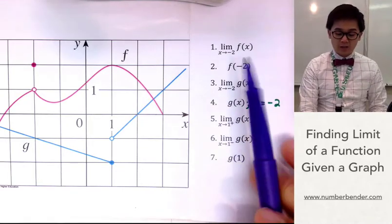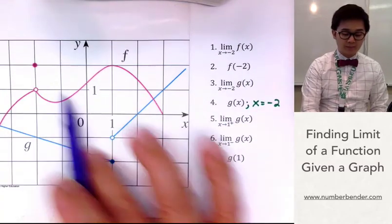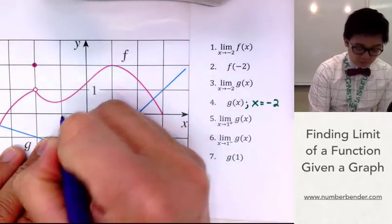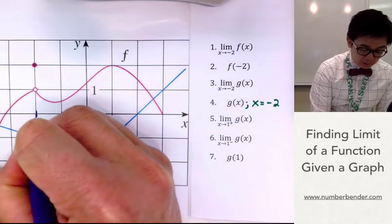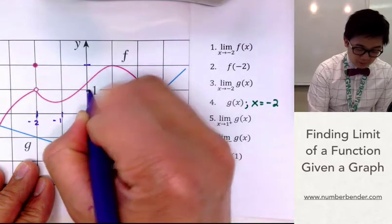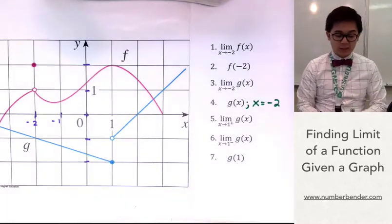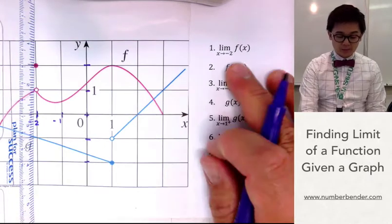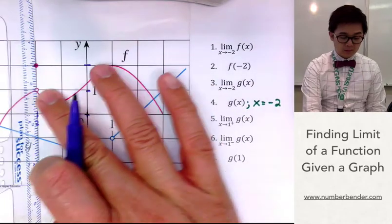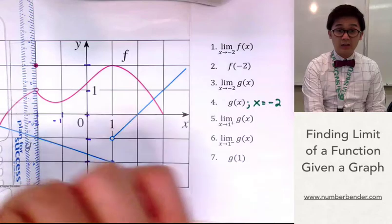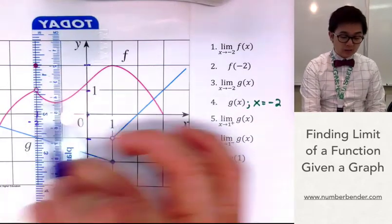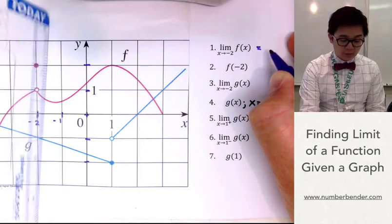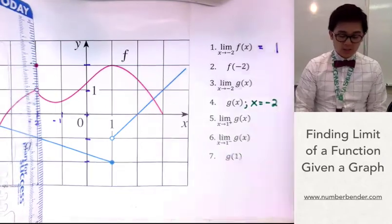For the first example, we're working on the limit of f of x as x approaches negative 2, so we focus on the pink graph. At x equal to negative 2, coming from the left and from the right, the value of y is approaching positive 1 from both sides. So the limit of f of x as x approaches negative 2 is positive 1.